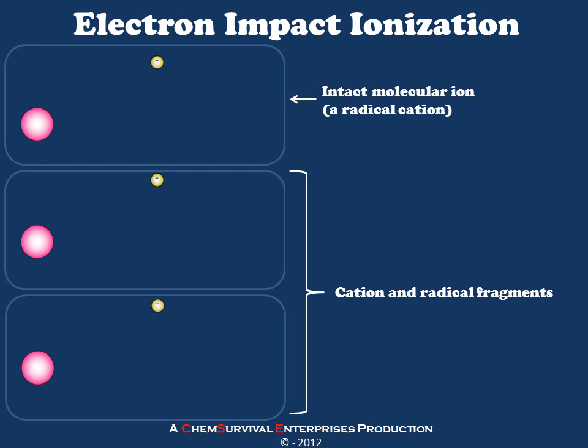Let's begin by considering how to ionize a molecule. I'll be showing you today one of the most basic but most widely used ionization methods in mass spectrometry — that is electron impact ionization. In electron impact ionization, the gas phase molecules are passed through an arcing electrical current, which consists of very high energy electrons.